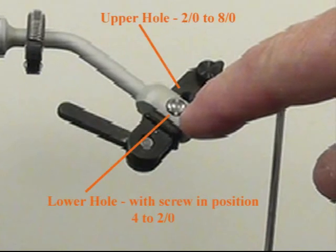The upper hole accommodates 2-0 to 8-0 hooks and the bottom one size 4-0 to 2-0 hooks.